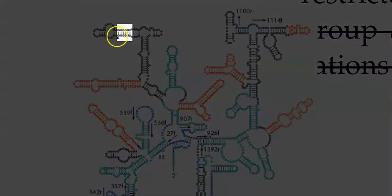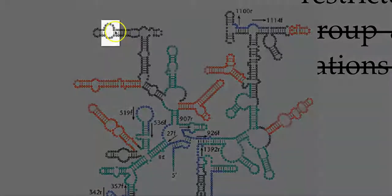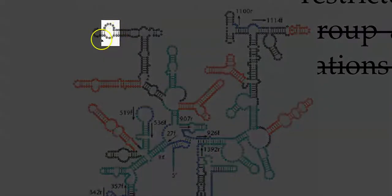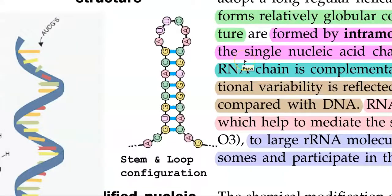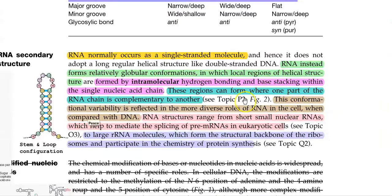For example, here, complementary base pairing is allowed so that it forms a stem-like structure. In this particular loop region, the nucleotides are not complementary — they may be A to A. If A to A is present, it won't allow base pairing, and as a result it will form into a loop-like structure. This conformational variability is reflected in several diverse roles for RNA in the cell compared to that of DNA.